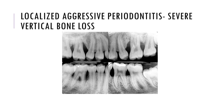Localized aggressive periodontitis leads to severe vertical bone loss. This is a rapidly progressive and aggressive form of periodontitis with severe furcation involvement and bone defects, and its radiographic appearance is shown here.